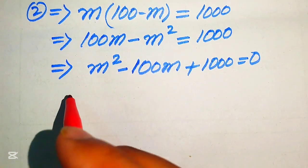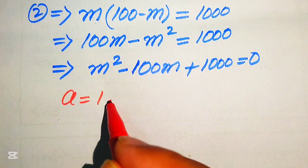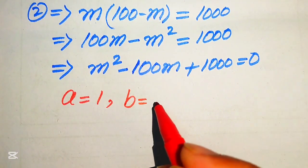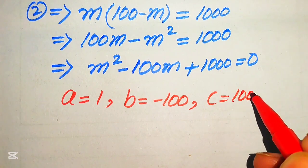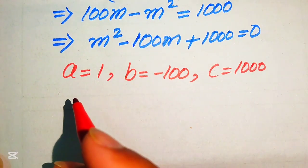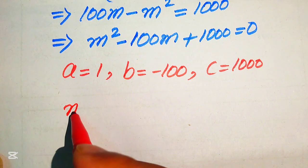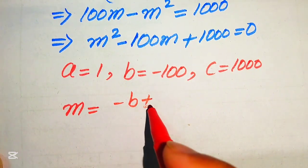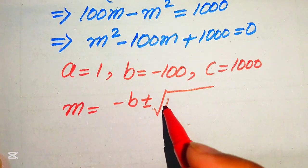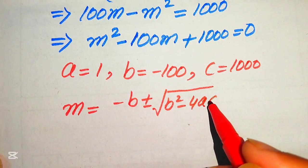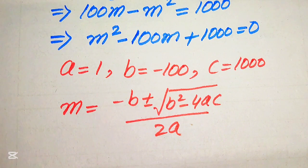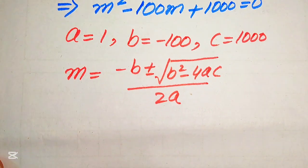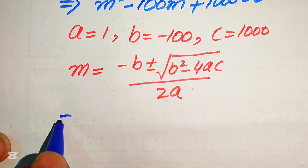First we write the coefficients of this equation: a equals 1, b equals minus 100, and c equals 1000. We state the quadratic formula as m equals minus b plus or minus the square root of b squared minus 4ac, divided by 2a. Now we substitute the values of a, b, and c into this formula.